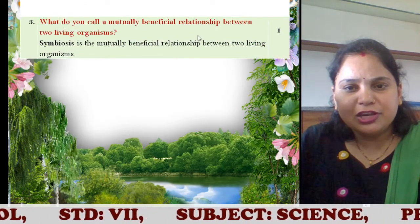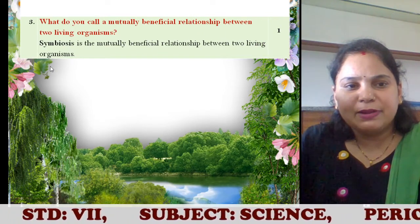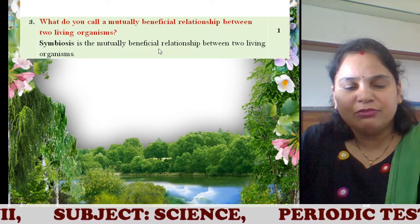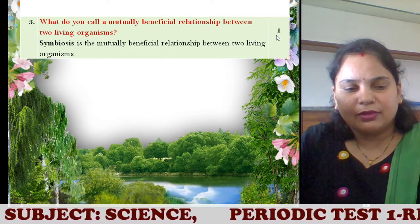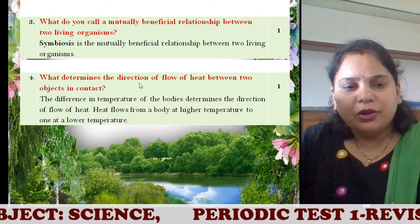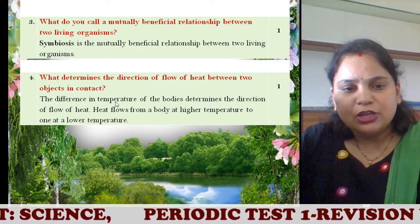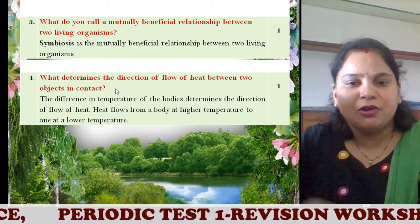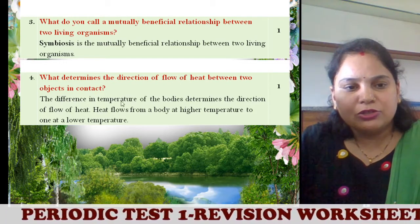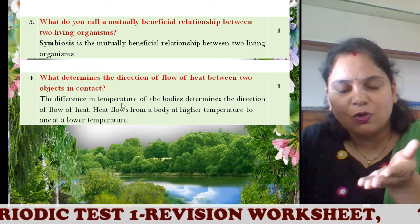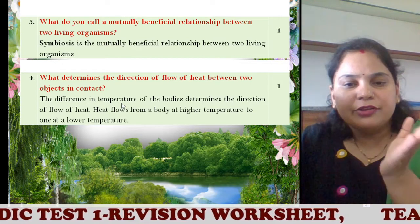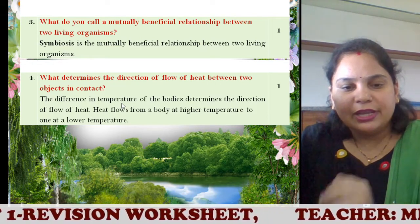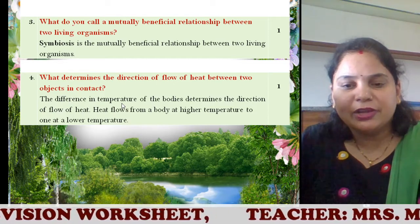What do you call a mutually beneficial relationship between two living organisms? The answer expected is symbiosis. You have to write not only the one word, but with the whole sentence — then you will get one mark. Next question: what determines the direction of flow of heat between objects in contact? The factor is the temperature — the difference in temperature. One has to be cold, one will be hot. The difference in temperature of the body determines the direction of flow of heat. That is the first half mark. Now, how it travels: it travels from a higher temperature to a lower temperature — then you get one mark.